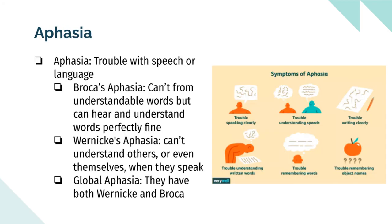Another disorder is aphasia, which is having trouble with speech or language. The three types of aphasia are Broca's, Wernicke's, and global. Broca's aphasia prevents a person from forming intelligible words or sentences, but has little or no effect on the ability to understand others when they speak. People with Wernicke's aphasia can't understand others or even themselves when they speak. People with global aphasia cannot produce understandable words or understand each other, and they communicate with written language.